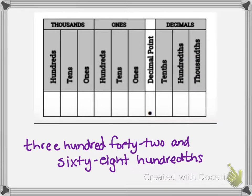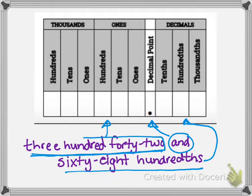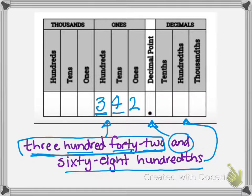Let's try one more. We notice our word 'and' — that's where our decimal is. Everything before it goes to the left of the decimal, everything after goes to the right. We deal with the whole numbers first: three hundred forty-two. Double check — three hundred forty-two. Good. Now we're at our 'and.'